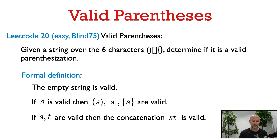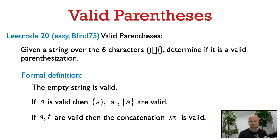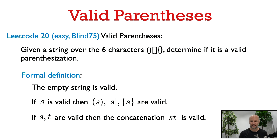For those who like a more formal definition, here's the definition of what a valid parenthesization is. We can start with the empty string — that's valid. From a valid parenthesization S we can enclose S in matching opening and closing symbols to get another valid parenthesization. And from two valid parenthesizations S and T we can concatenate them together, and that's also valid.